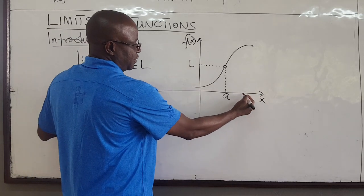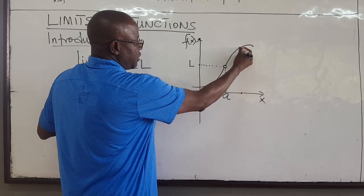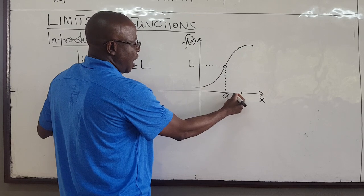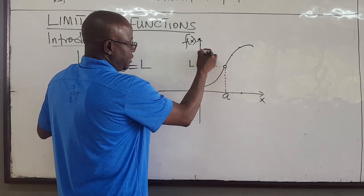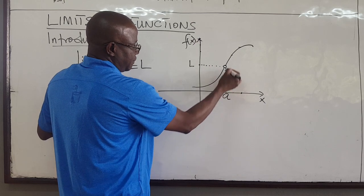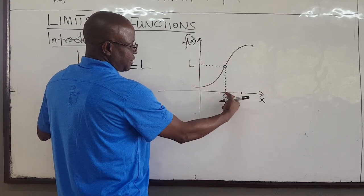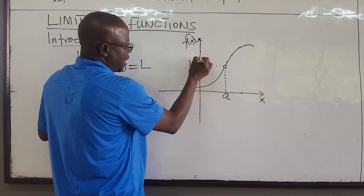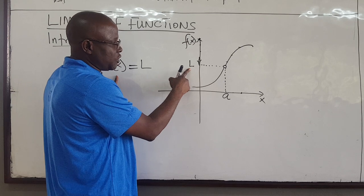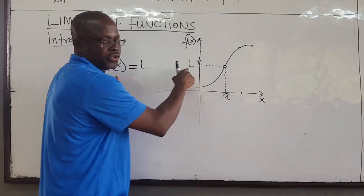The limit as x approaches a means that when x is approaching a, either from the left-hand side or the right-hand side, the value that it takes is what is called the limit. If I'm on the right-hand side of a and get closer to a, the value of the function gets closer and closer to the number L. So we say the limit of this function as I approach from the right-hand side is equal to L.